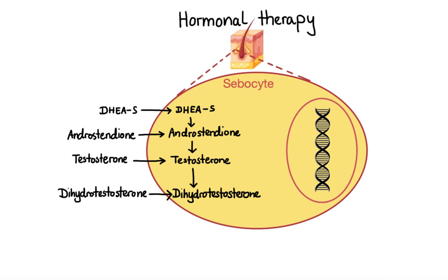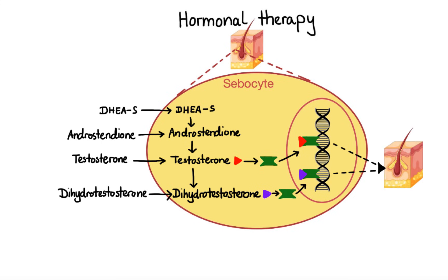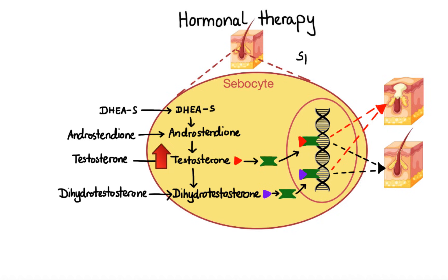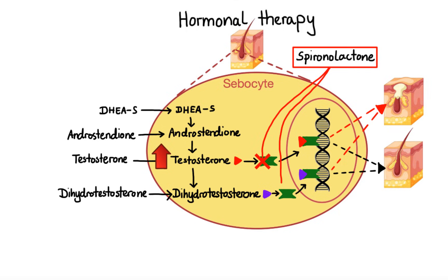Once inside the cell, testosterone and dihydrotestosterone bind to the cytoplasmic receptor to form a complex, which then enters the nucleus and binds to specific genes, thus initiating cellular responses that lead to sebocyte proliferation and enhanced sebum excretion. The problem arises when the level of androgen hormones such as testosterone increases — for example during puberty. This can lead to overstimulation of androgen receptors, which in turn can result in excessive sebum production, subsequent clogging of the pores, and formation of a favorable environment for the growth of P-acnes bacteria. To mitigate this problem, an agent called spironolactone is used due to its ability to block androgen receptors within sebocytes and thus inhibit androgen-induced sebocyte proliferation.